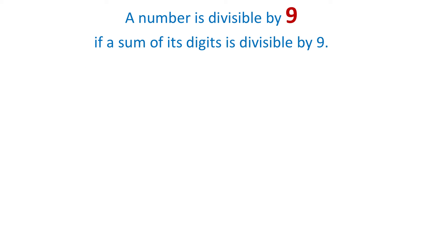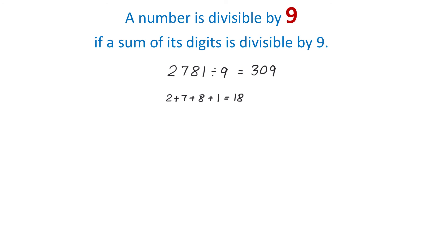A number is divisible by 9 if the sum of its digits is also divisible by 9. For example, the number 2781 is divisible by 9, and that is because if we add the digits 2, 7, 8, and 1, we get a number that is divisible by 9. This number is 18. Therefore, the number 2781 is also divisible by 9 and the result is 309.